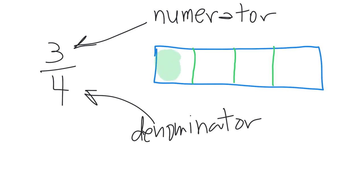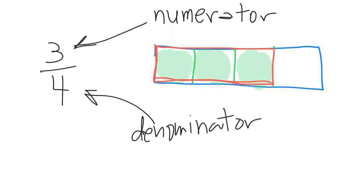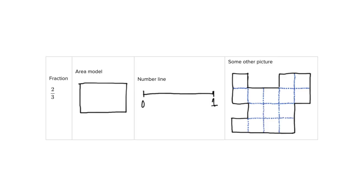We shade in one, two, three pieces. This chunk right here indicates three-fourths, because we know that the whole thing has been cut up into four pieces — one, two, three, four — and three of them are shaded in. So this is three-fourths.